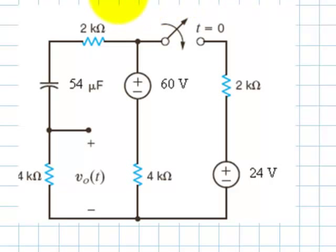Assignment 5, question 5. The circuit has been like this for a very long time. At t equals zero, the switch closes. Find the voltage in this 4 kΩ resistor, V0 of t, as a function of time after the switch closes, that is, for t greater than zero.